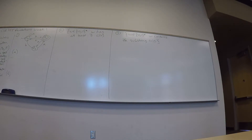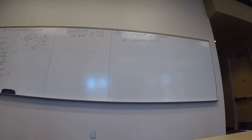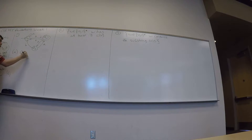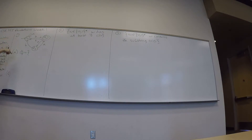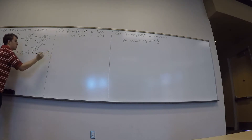Let's get to examples. I have this DFA with three states. The first question says: write out a complete formal description of this DFA. So how would I do that? I have to tell you Q, sigma, delta, everything. What is Q here? Q is a set — Q equals the set containing Q0, Q1, Q2, the states of the machine.